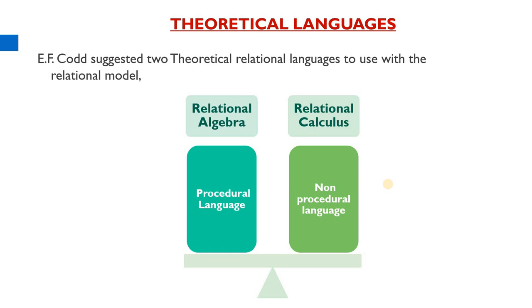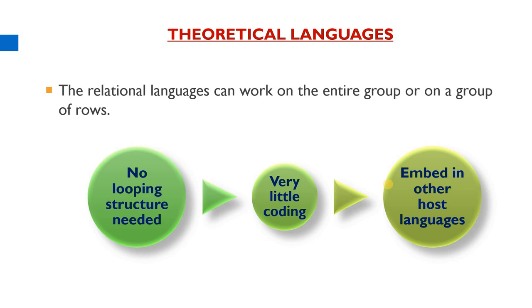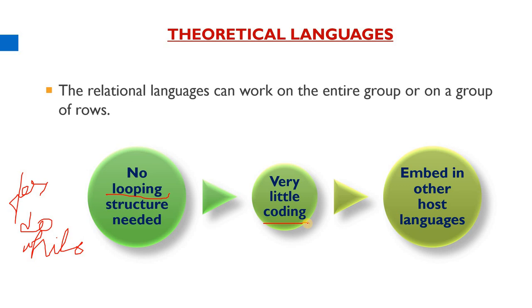The key difference between these two languages is procedural versus non-procedural. Relational languages can work on the entire group or on a group of rows, dealing with relational tables in the form of rows and columns. In theoretical languages there is a concept of no looping — you are not going to apply any looping structures like for, do, or while. These types of looping are not supported. Coding has been minimized, and you can embed this theoretical language in other host languages, that is, in other high-level languages. These are some of the advantages of theoretical languages.